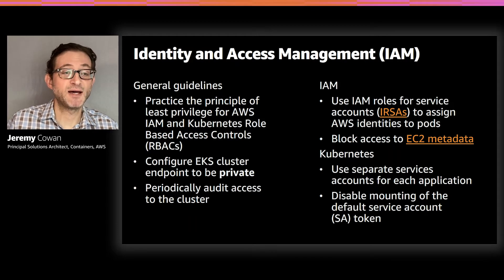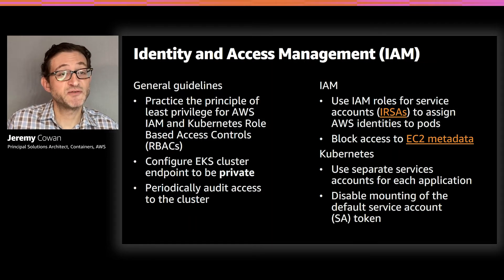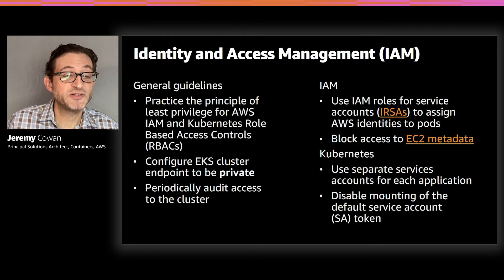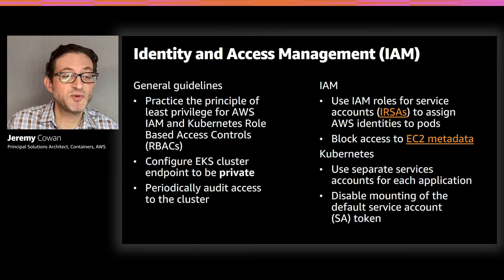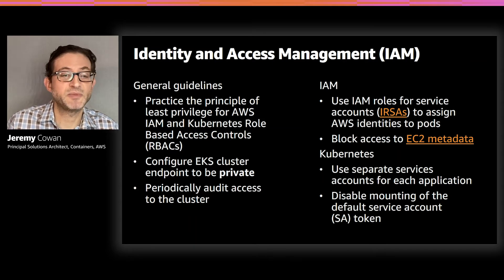Similarly, you want to block access to EC2 metadata — you don't want pods running on an instance to inherit the role assigned to that instance. Each pod that requires access to an AWS API should make use of IRSA — IAM roles for service accounts. For Kubernetes, use separate service accounts for each application, partly because service accounts can be used as a selector for security groups for pods or network policies with Calico. You should also disable the mounting of the default service account token, particularly if your application does not require access to the Kubernetes API.